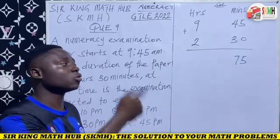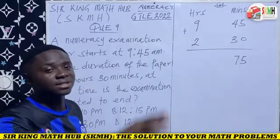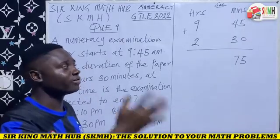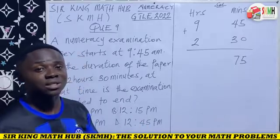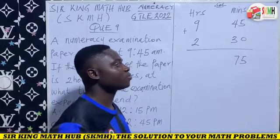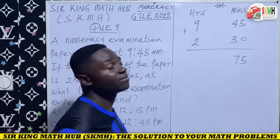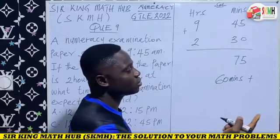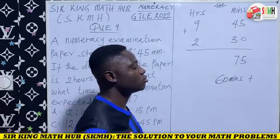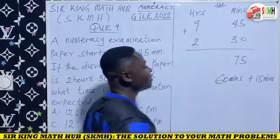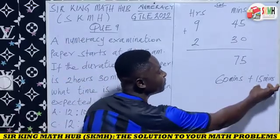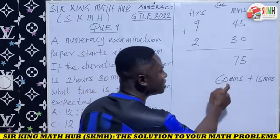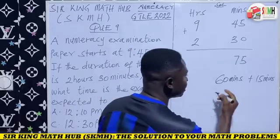No, 9:60 PM is the same as 10 o'clock PM. So anytime you get to 60 minutes, you have to convert it to hours. Every one hour is equivalent to 60 minutes. So for the 75 minutes, we are going to break it into two parts: subtract 60 minutes from 75 minutes, giving us 60 minutes and 15 minutes. So 75 minutes has been split into 60 minutes and 15 minutes.